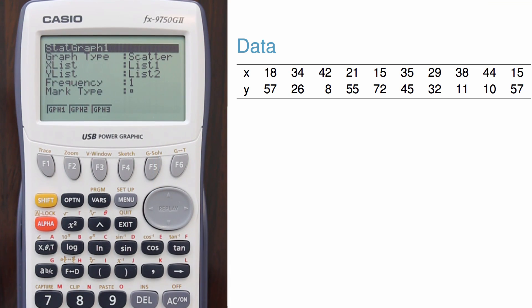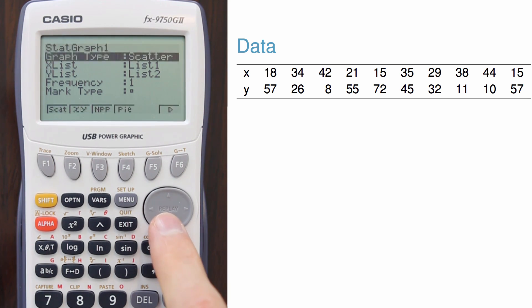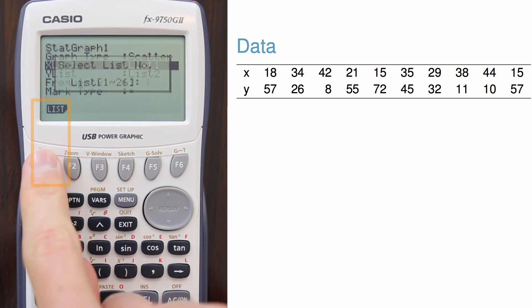Here, I'm going to use graph 1, which is shown as a scatter plot using lists 1 and 2. If I needed to change a list number, I'd go to list, hit F1, and then enter the proper list number.